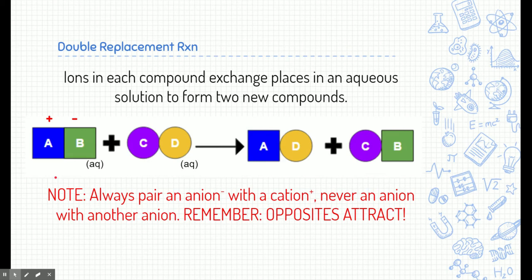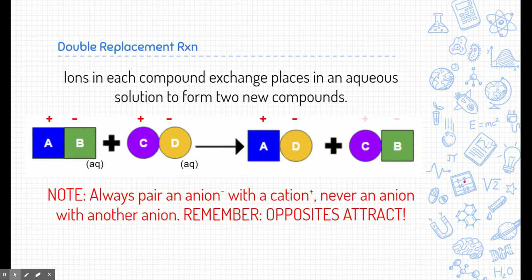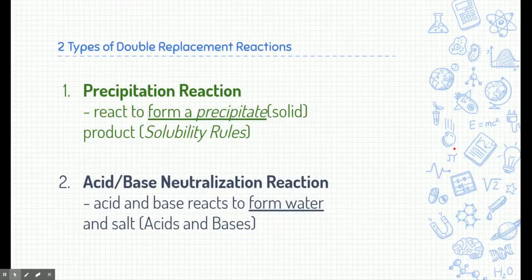AB could be a metal and a nonmetal, or maybe a metal and a polyatomic ion. C and D are the same — a positive and a negative. We always put positive first and negative second. These compounds are going to exchange partners. A is positive and D is negative, so A finds D as a new partner. And C is positive, B is negative, so C finds B. This is basically how a double replacement reaction works.